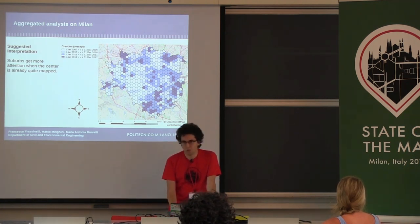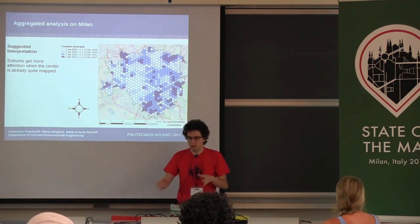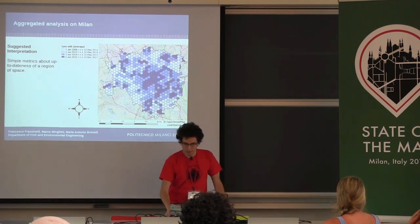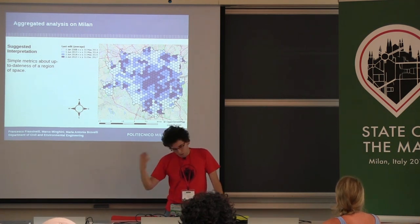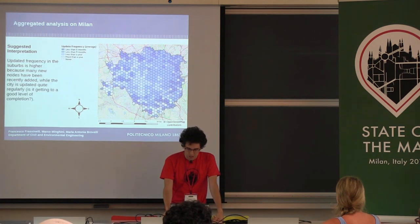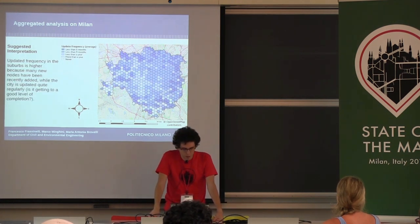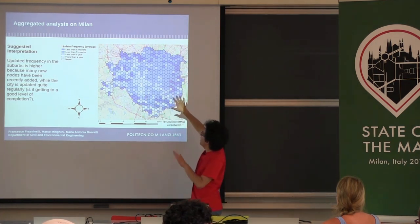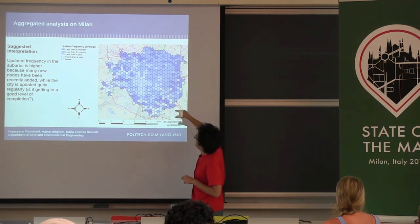We can think that when the center of the city gets mapped, people start to map outside because there is much missing information. We also have the last edit average — a very simple index to have an idea of what's happening. Update frequency shows that nodes in the middle have similar patterns without very significant discrepancies, while nodes outside have been updated too, suggesting Milan is possibly reaching a good level of completeness.